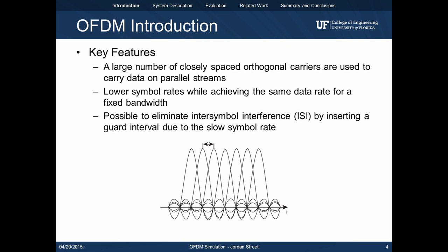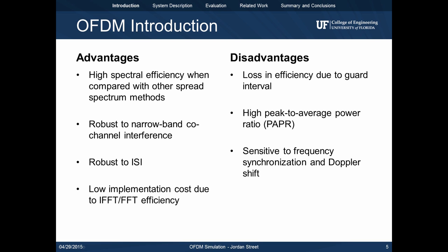OFDM uses a large number of closely spaced orthogonal carriers to transmit data on parallel streams. This allows us to reduce the symbol rate for a fixed data rate and bandwidth. The slower symbol rate allows us to insert a guard interval in between each frame, which helps minimize inter-symbol interference. Several advantages to OFDM include high spectral efficiency, strong interference rejection, and low implementation costs. Disadvantages include a loss in efficiency due to the guard interval, high peak-to-average power ratio, and a sensitivity to both frequency synchronization and Doppler shift.